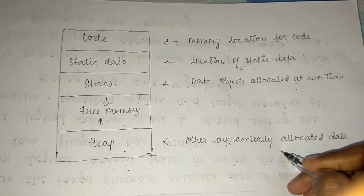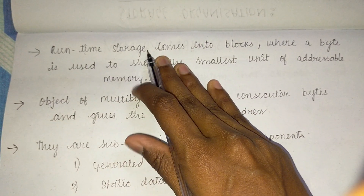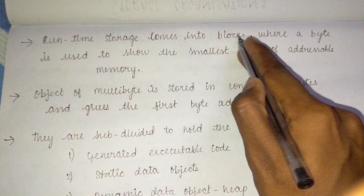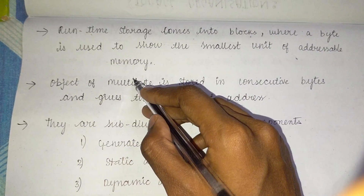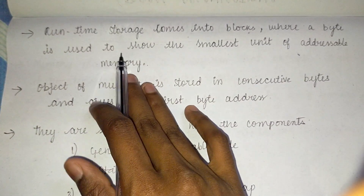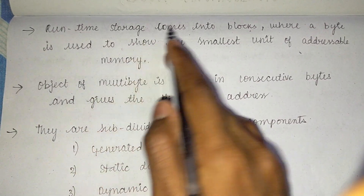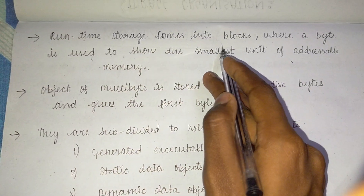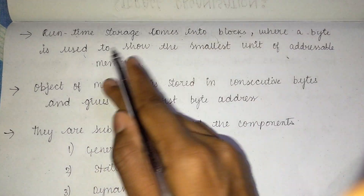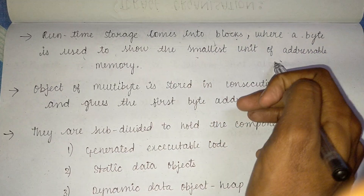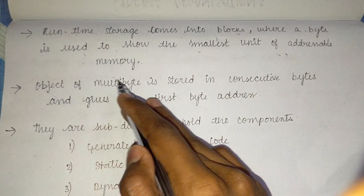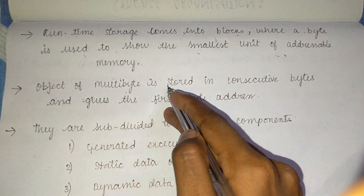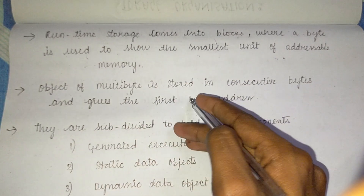Runtime storage comes in blocks, where a byte is used to show the smallest unit of addressable memory.